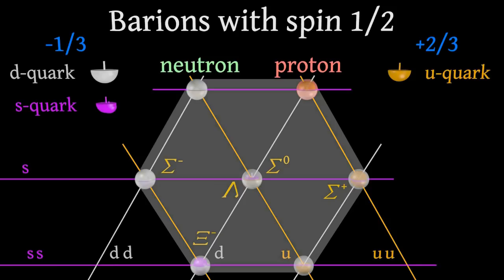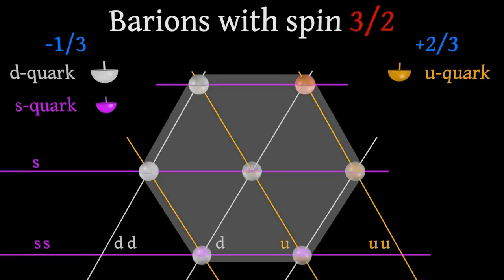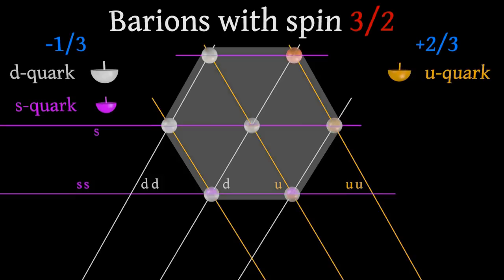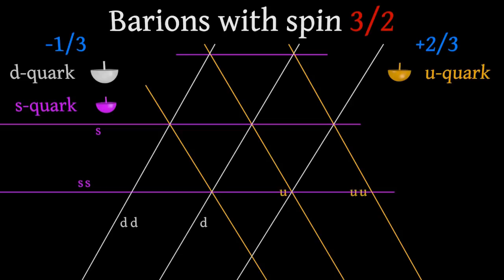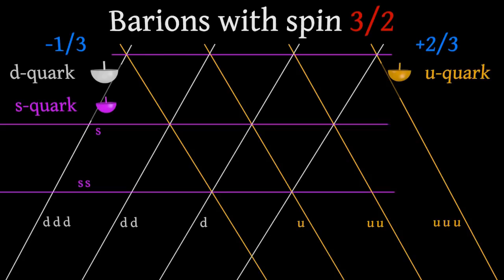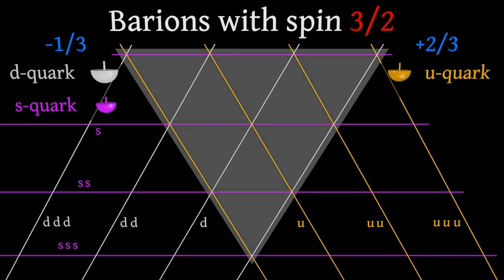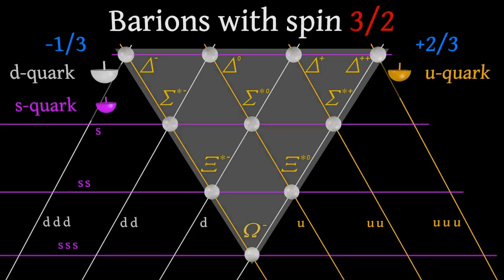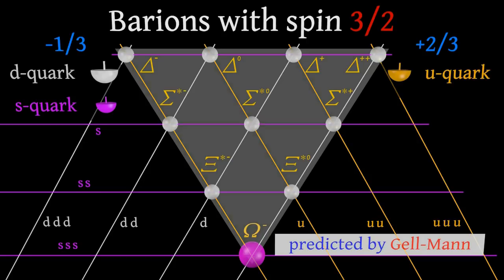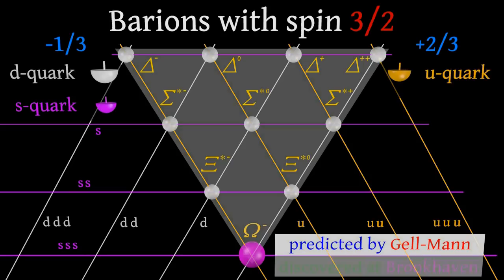Mathematically, it is possible to do the same for baryons with spin three-halves. We extend the array to include lines with three quarks — in this case all quarks have the same direction of their spins, and according to mathematical theory we can construct the corresponding baryon states. Most intriguingly, Gell-Mann predicted a new particle from completely theoretical considerations. This particle was indeed discovered in a subsequent experiment. So this model was very elegant, but had some unusual features.